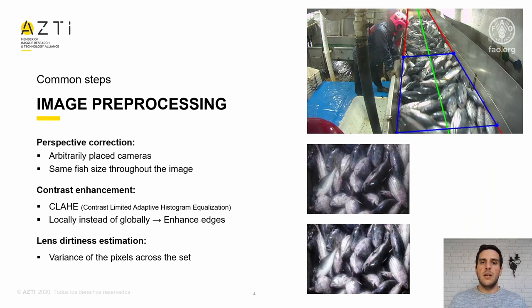The image preprocessing is divided into three parts. First, perspective correction and contrast enhancement. By following these two processes, we achieve a more homogeneous image, which appears to have been taken by the same camera and which has been optimized to improve fish segmentation. Then, estimating the lens dirtiness allows us to discard images that are so dirty that they will not provide useful segments for our work.